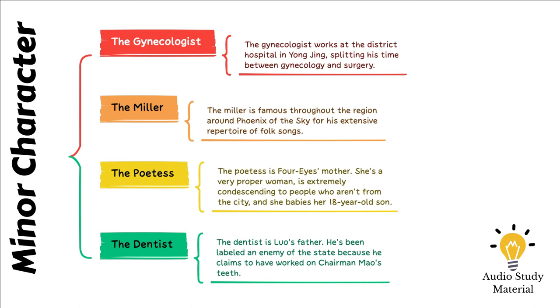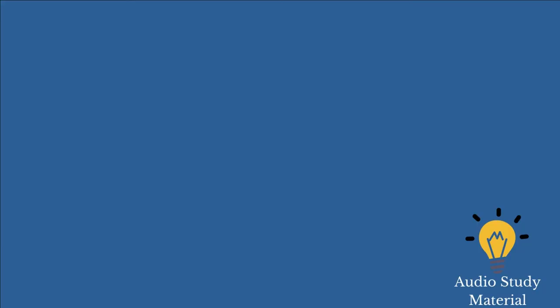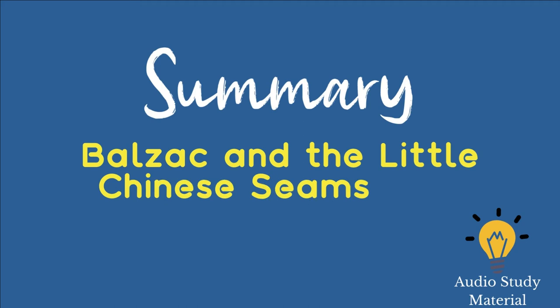Luo and the narrator spend a month reading all the books in the suitcase when the headman departs for a party convention. The novel Jean Christophe captivates the narrator most. Luo spends his days visiting and reading to the Little Seamstress. When a storm destroys the mountain, it creates a treacherous path that frightens even the narrator, who does not have a fear of heights like Luo.